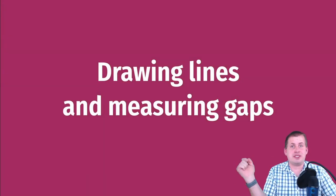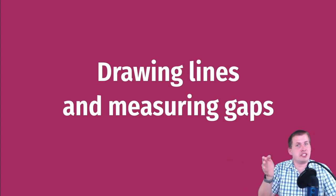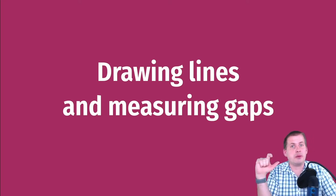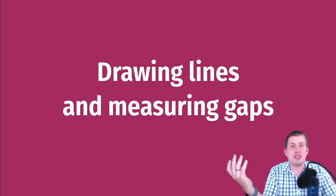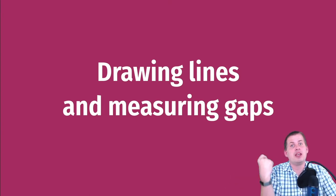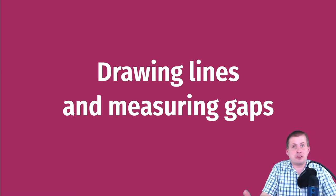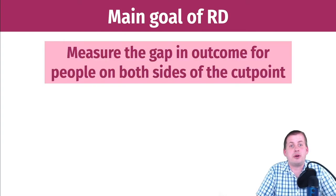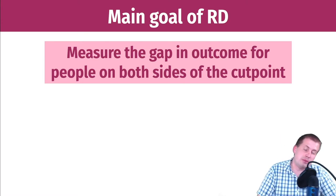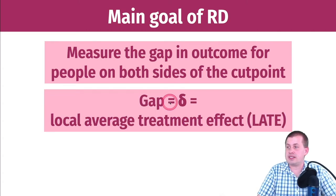As we saw in the previous section, when we talked about this hypothetical tutoring program — where if you score 70 or below you get a tutor, and if you score higher than 70 you don't — the way we measured that causal effect was by seeing a gap between two lines. The main intuition behind regression discontinuity is finding a gap and measuring the size of that gap. That gap is this lowercase delta, which is the causal effect we care about.